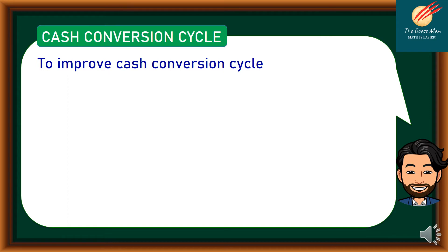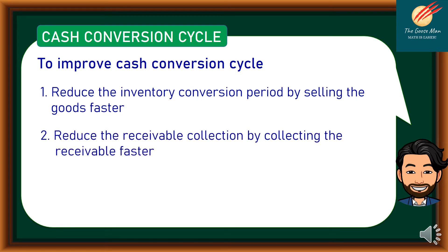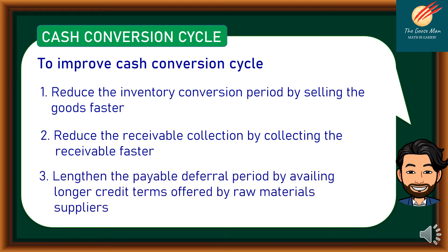The cash conversion cycle presents the general picture on the length of time involved between cash outflows and cash inflows. A business with a lower cash conversion cycle has a better cash position than a business with a very long cash conversion cycle. To improve the cash conversion cycle, the financial manager must: reduce the inventory conversion period by selling goods faster, reduce the receivable collection period by collecting receivables faster, and lengthen the payable deferral period by availing longer credit terms offered by raw materials suppliers.